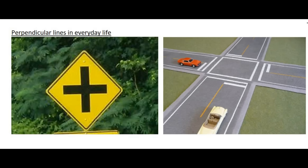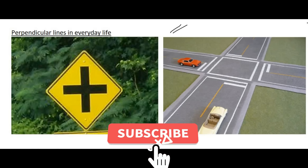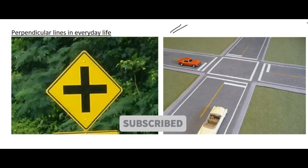In this video we are going to look at perpendicular lines. Perpendicular lines are exactly the opposite of parallel lines. Parallel lines have the same gradient, whereas perpendicular lines are completely opposite — one line would go in one direction and the other line would go in the completely opposite direction.